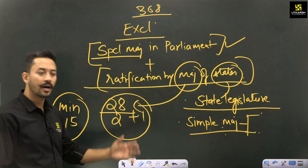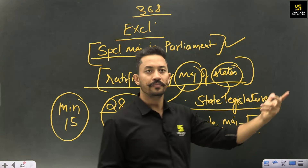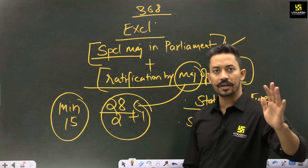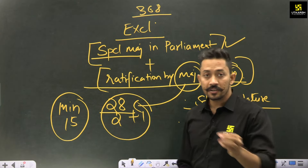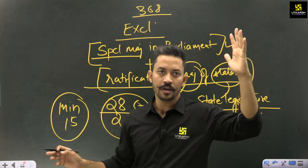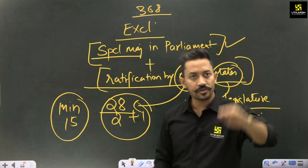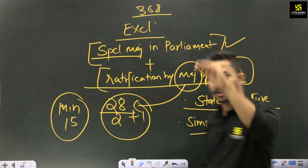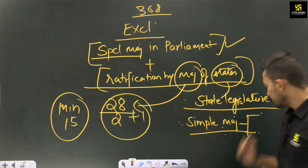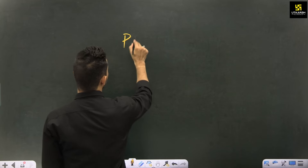As soon as the 15th state passes the bill, the work is done — the bill is passed. You need minimum 15 states, though all 28 passing it is fine too. So first Parliament passes with special majority, then it goes to state legislatures where it is passed by simple majority. This is the exclusive majority process.